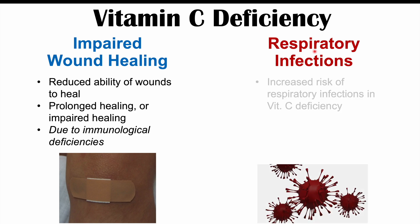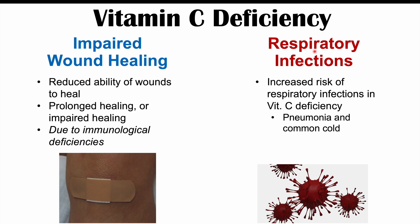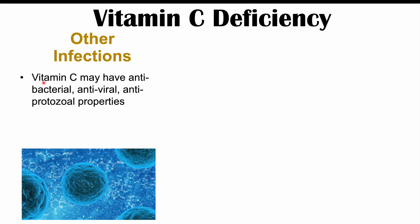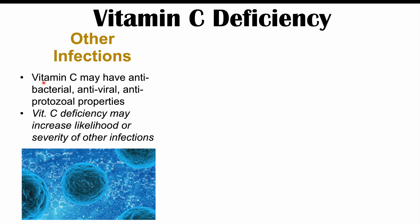We can also see an increased risk of respiratory infections in vitamin C deficiency. Pneumonia and the common cold can occur more commonly, for longer periods of time, and with increased severity. This can apply to subclinical vitamin C deficiency as well. Other infections may also be more likely, as vitamin C has been shown in the lab to have antibacterial, antiviral, and antiprotozoal properties, although there is less evidence for this than for respiratory infections.